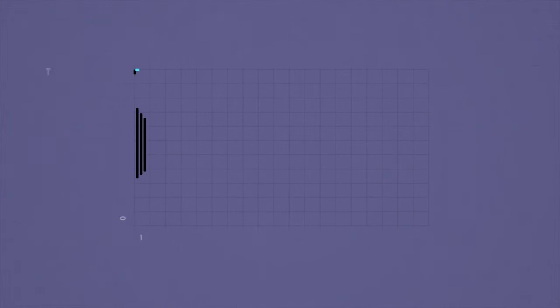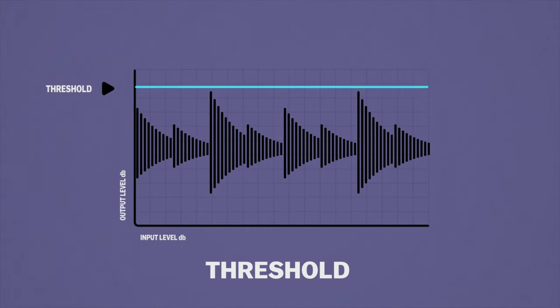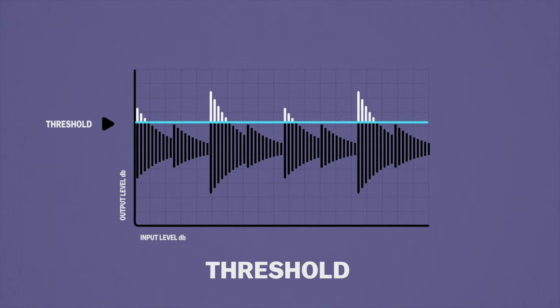One of the first controls you will use on a compressor is the threshold. The threshold control sets the level at which the compressor starts to activate. When the incoming signal level passes above the threshold, the compressor will engage. For example, if I set the threshold at minus 6 dB, once the level of the incoming signal passes minus 6 dB, the compression will begin.